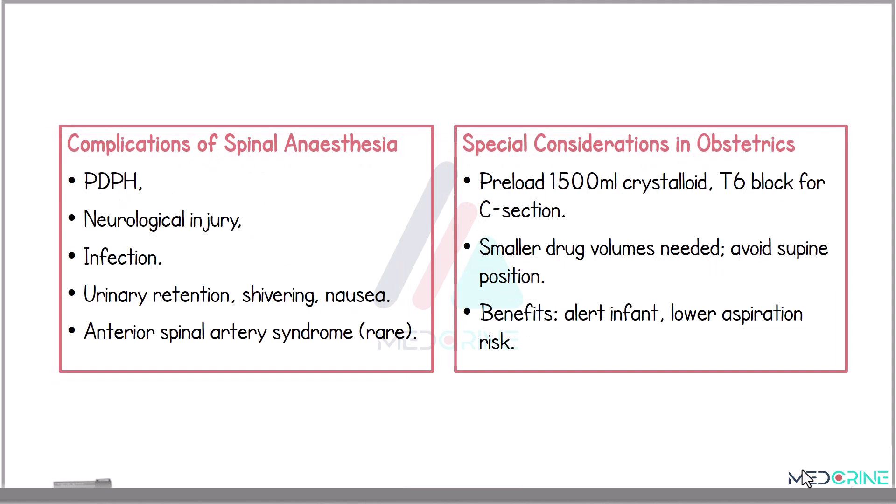The possible complications associated with spinal anesthesia include a post-dural puncture headache, neurological injury, infection if aseptic techniques are not used, urinary retention, nausea, and shivering due to excessive heat loss. A rare but serious condition that can sometimes occur is anterior spinal artery syndrome, which causes irreversible damage.